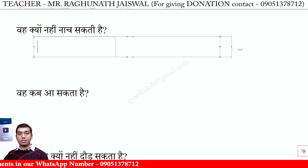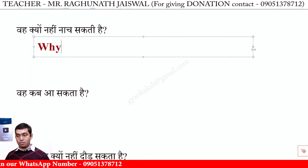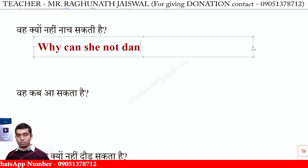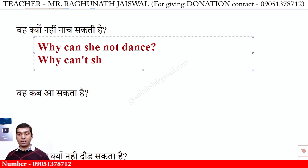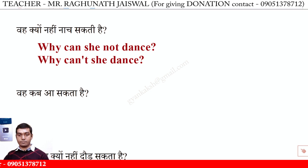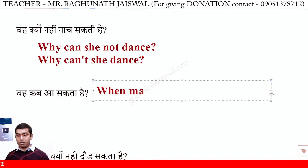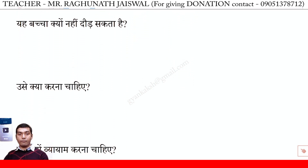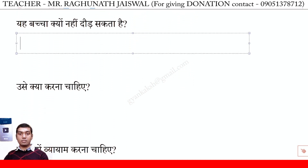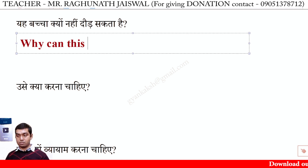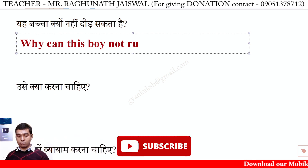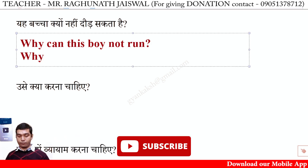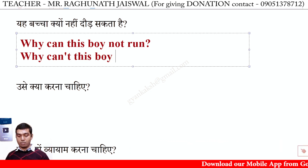वह क्यूं नहीं नाच सकती है? — Why can she not dance? Short form: Why can't she dance? वह बच्चा क्यूं नहीं दौड़ सकता है? — Why can this boy not run? Short form: Why can't this boy run?